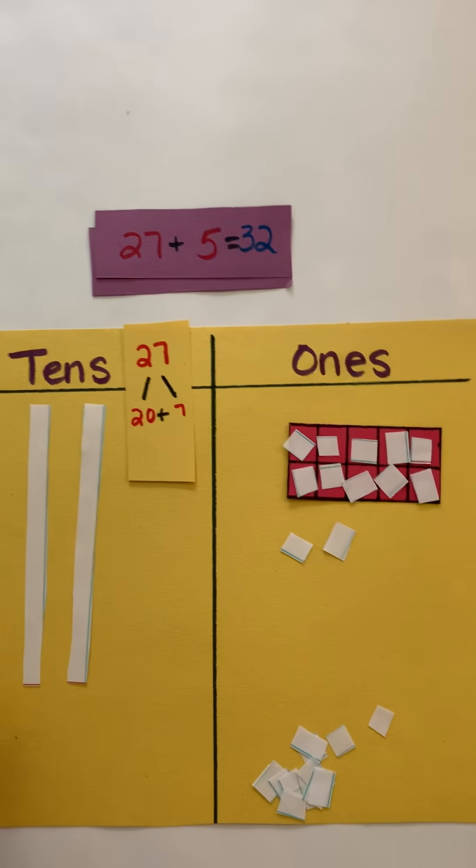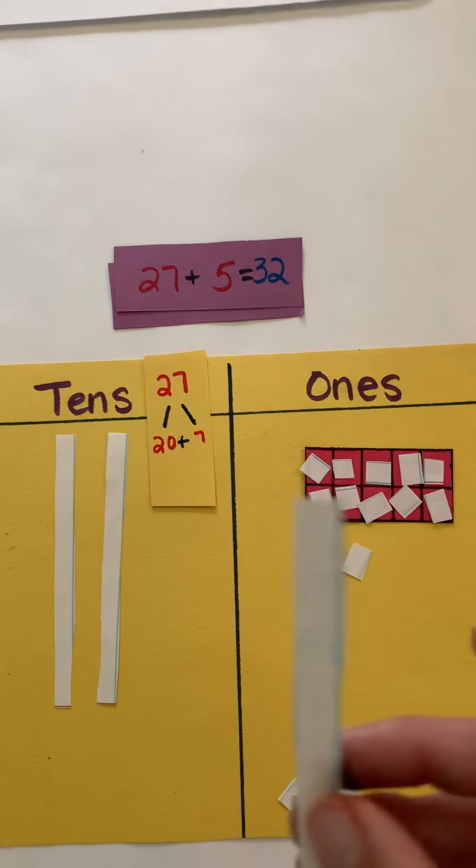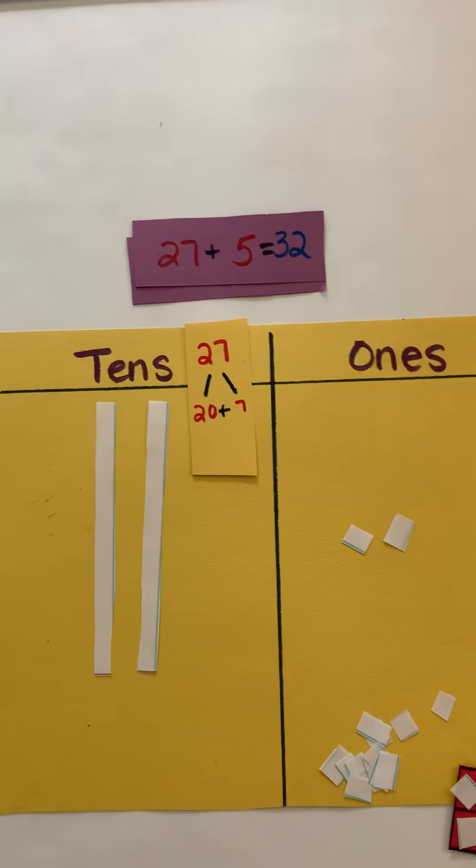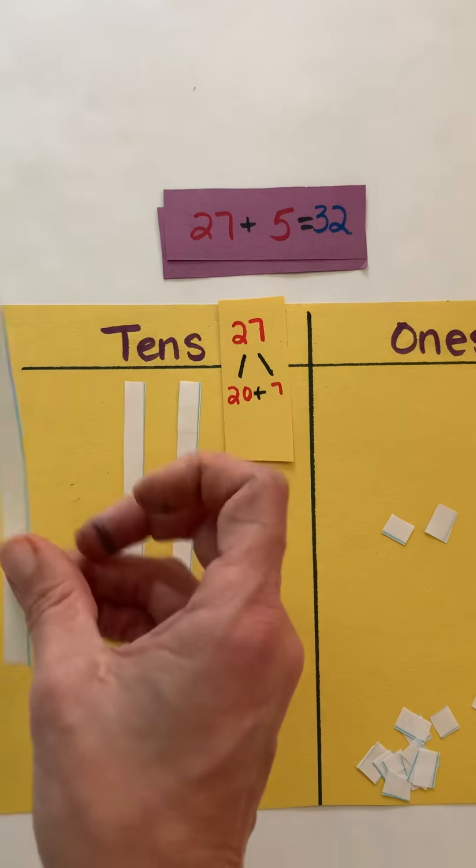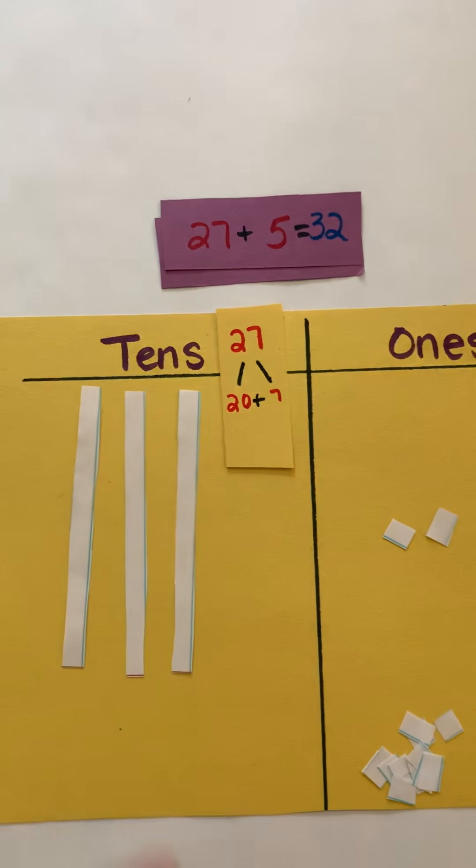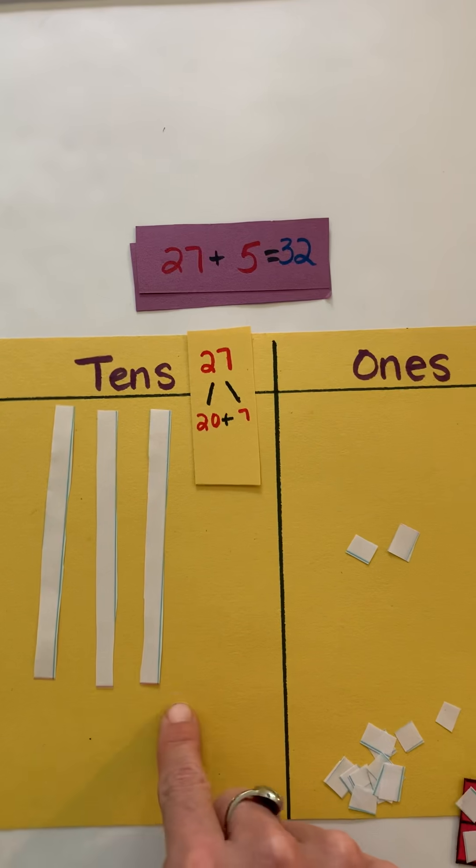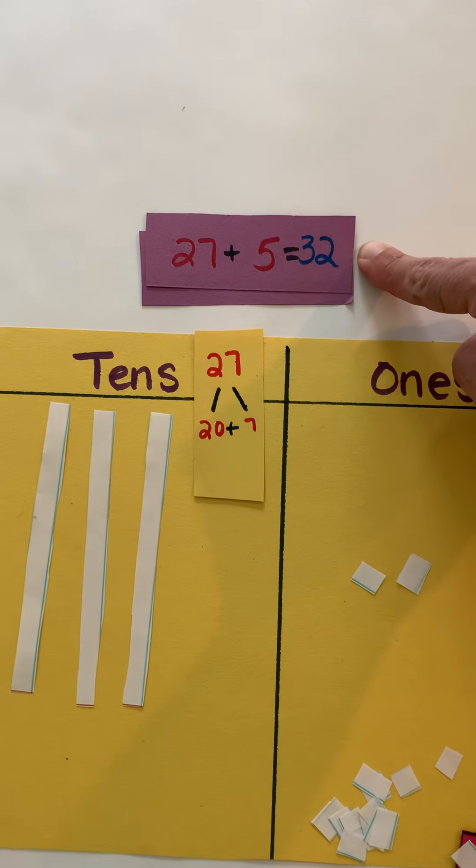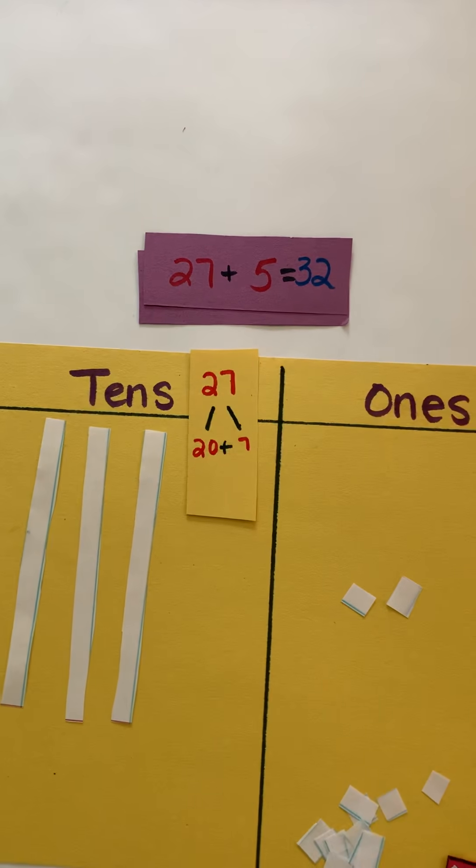Then I can think, once again, that I can see that group of 10 and I need to exchange it for this ten. So I'm going to trade those out, put this ten over here, and then once again I can see that I have 10, 20, 30, 31, 32. So my sum is 32. 27 plus 5 equals 32.